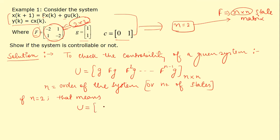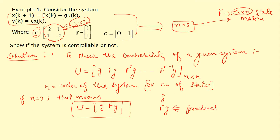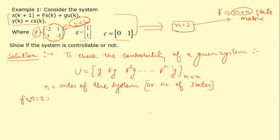Since n is 2, the controllability matrix U will be [G, FG] — two columns and two rows. G is already given as [1, 1]ᵀ. Now we need to find FG, which is the product of matrix F and matrix G. F is given as [-2, 1; 1, -2].